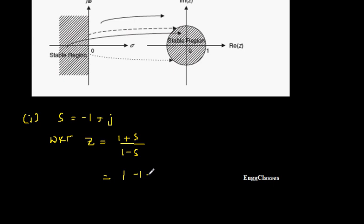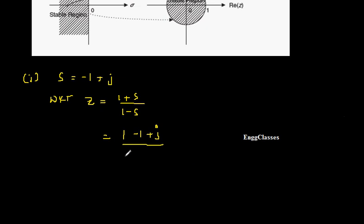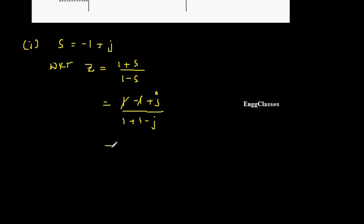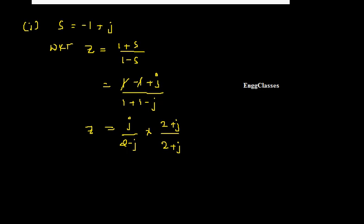I cannot comment on the properties directly, so I need to rationalize. Multiplying numerator and denominator by (2 + j): the numerator gives j(2 + j) = 2j + j² = 2j - 1. The denominator gives (2 - j)(2 + j) = 4 - j² = 4 + 1 = 5. So z = (-1 + 2j) / 5, which equals -1/5 + (2/5)j.